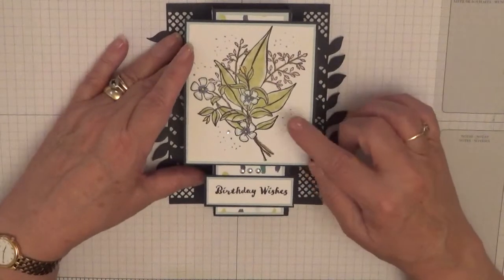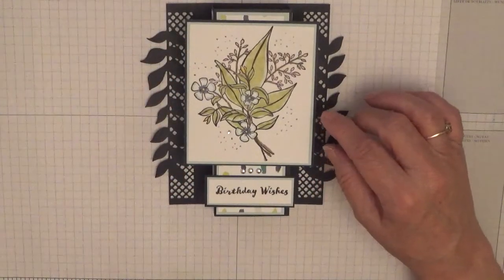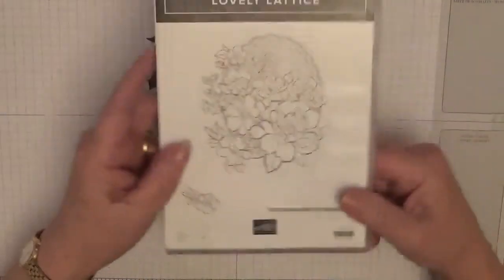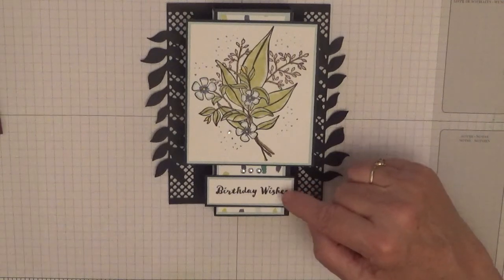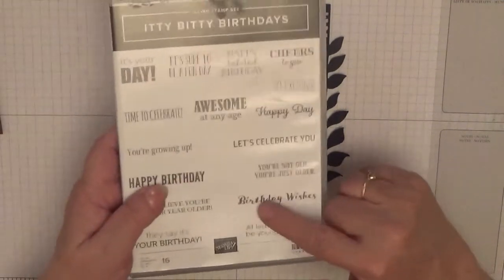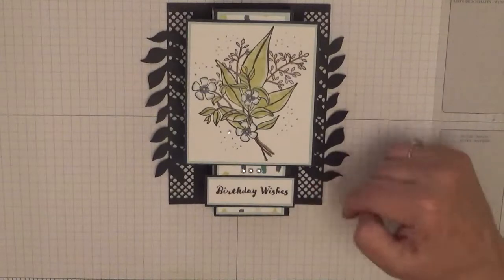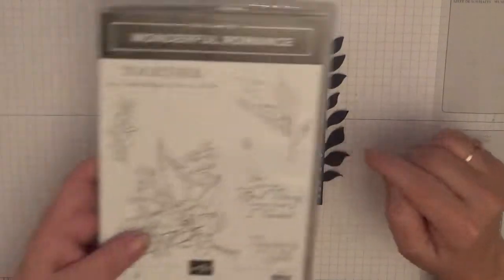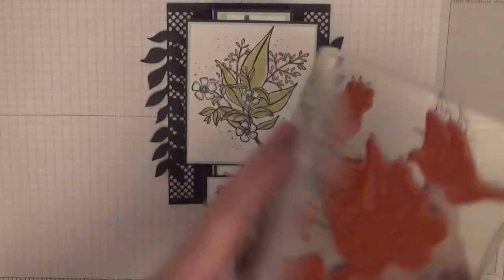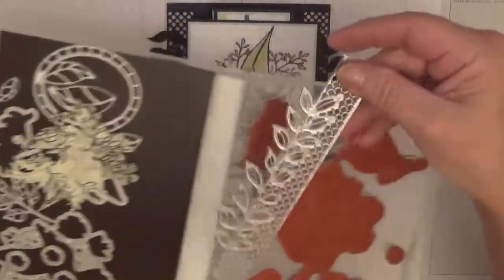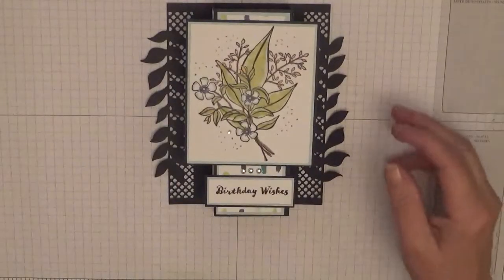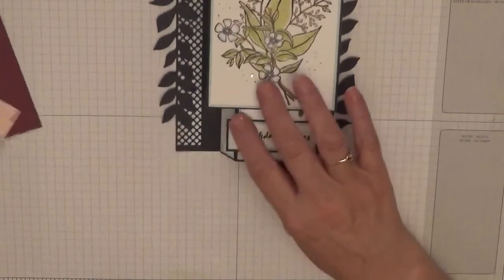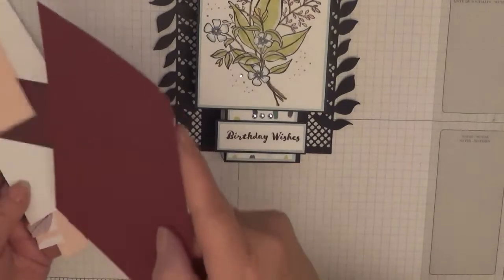To make this card, I'm going to change the image on the front. I'm going to use the Lovely Letters stamp set. For the sentiment I'm using Itty Bitty Birthdays, just birthday wishes. For the die I'm using Wonderful Romance with the matching dies.